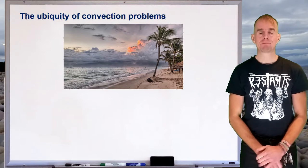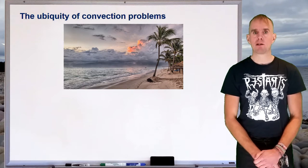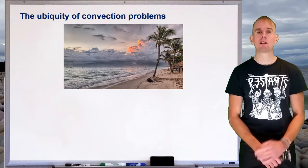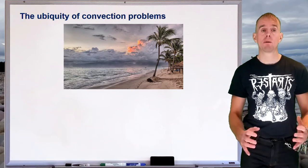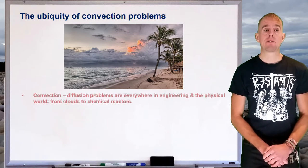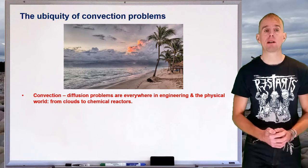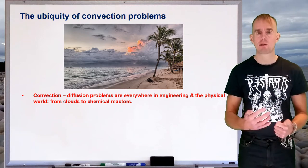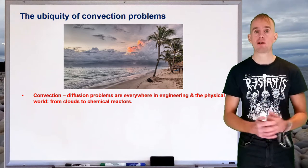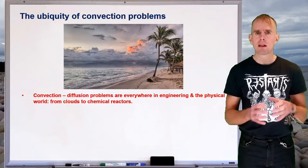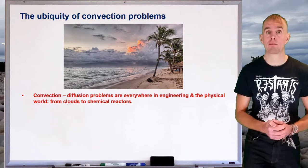Now, convection is everywhere. I've put on the whiteboard a photograph of a nice tropical beach at sunset, and you can see all those clouds brewing in the horizon. If we look at nature and especially at cloud forms, we find convection has a dominant role in a lot of the fluid mechanics of the planet. We also see this within our engineering world — chemical reactors, heat transport equipment — where we very often have a combination of both convection and diffusion. Let's clarify exactly what we mean in the context of transport equations about a convection-diffusion problem.